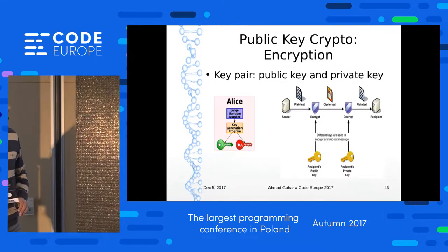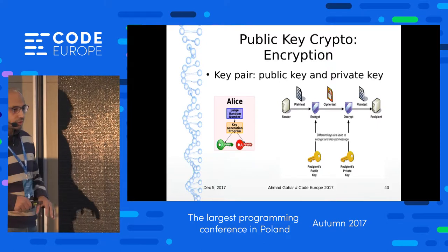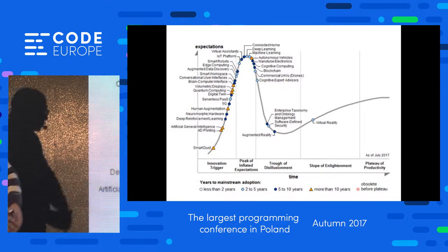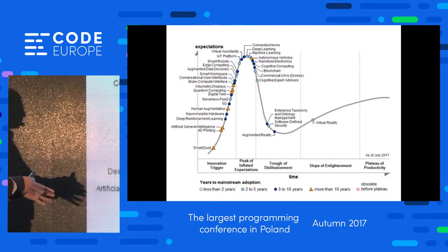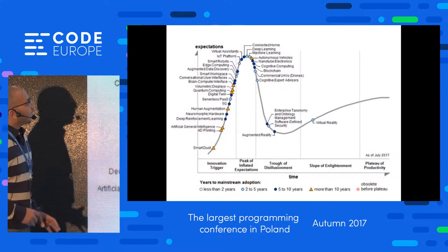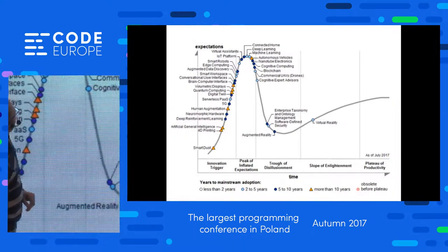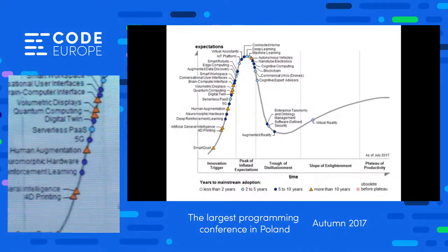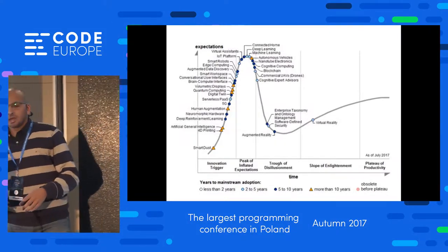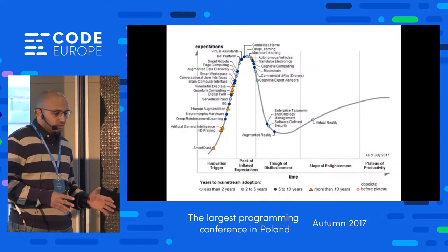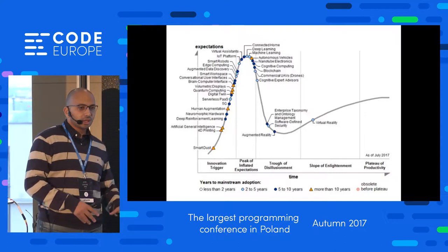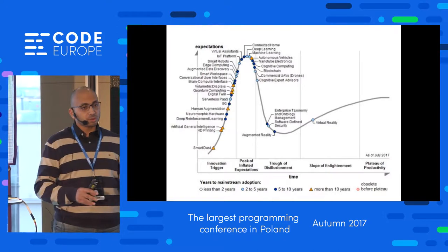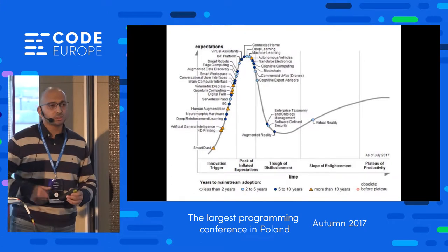That diagram is the Gartner hype cycle — not about blockchain only, but about new technology and its trends. It's divided into sections: the innovation trigger, the peak of inflated expectations, the trough of disillusionment, and the slope of enlightenment. Blockchain is at the end of the peak of inflated expectations, meaning the environment thinks the technology can do more than it actually can. That period is declining and we're starting to realize what blockchain is, what its environment is, and which industries need it.